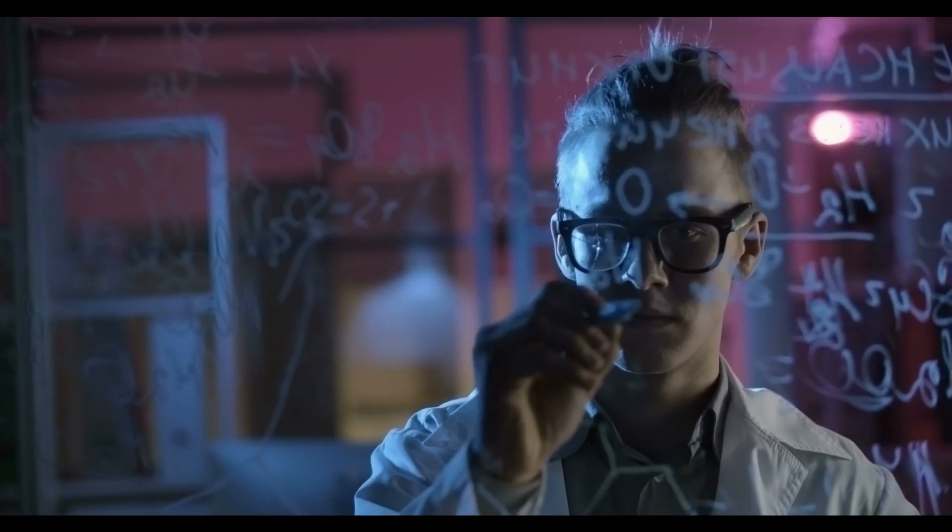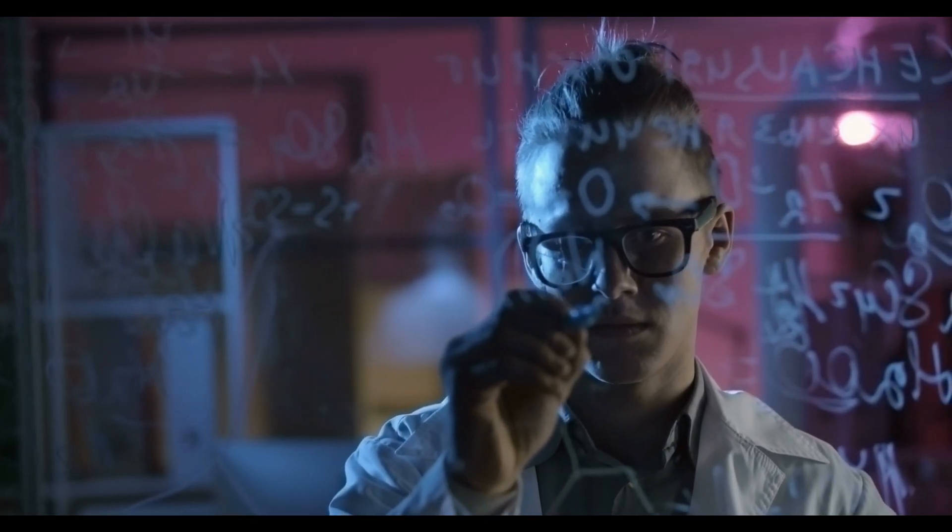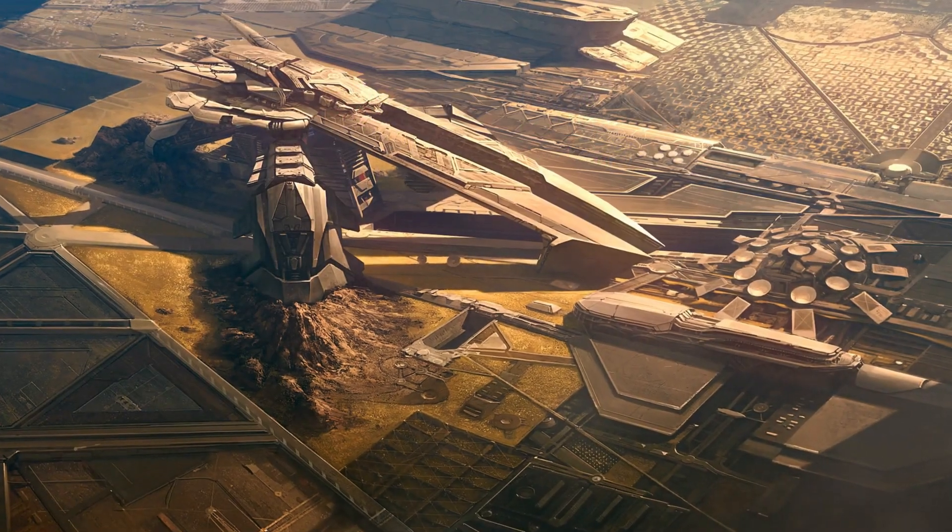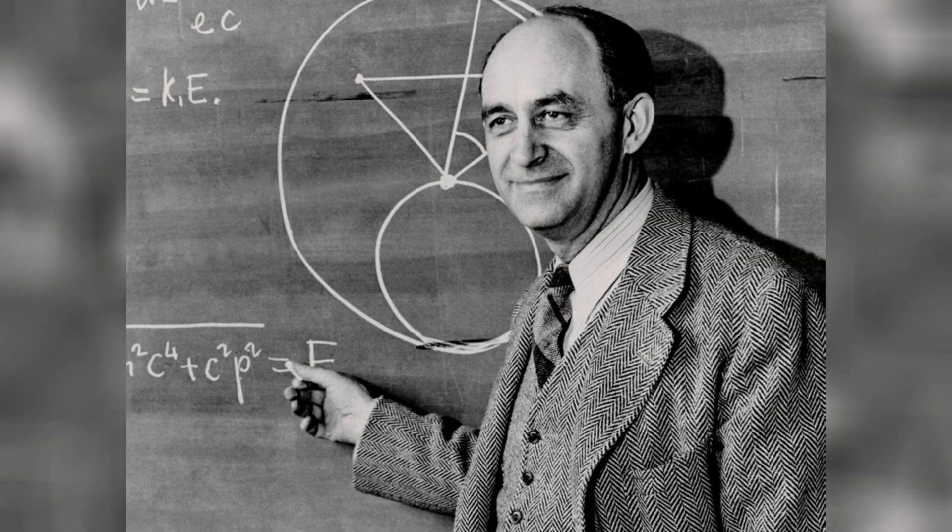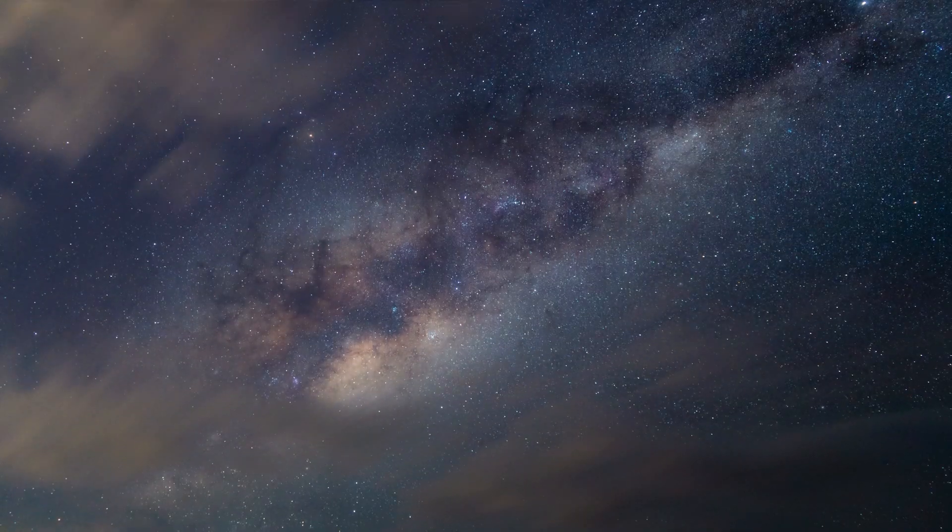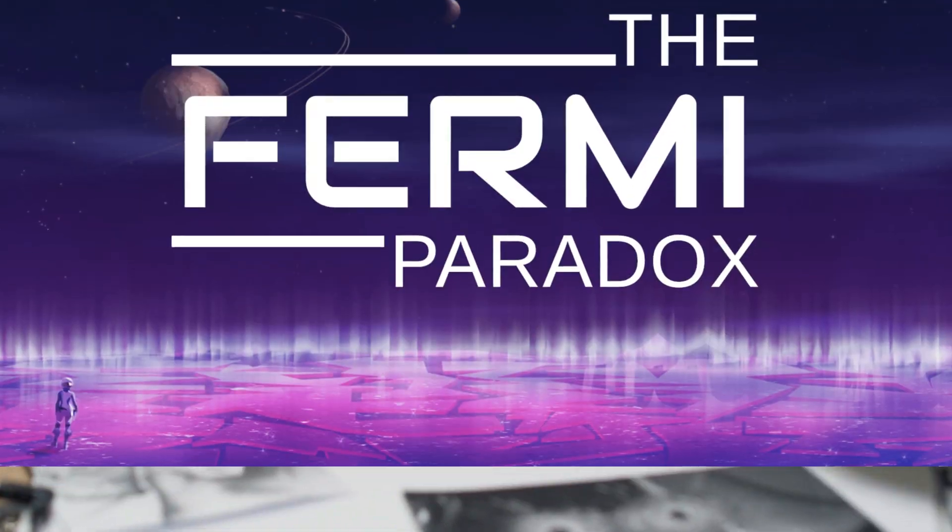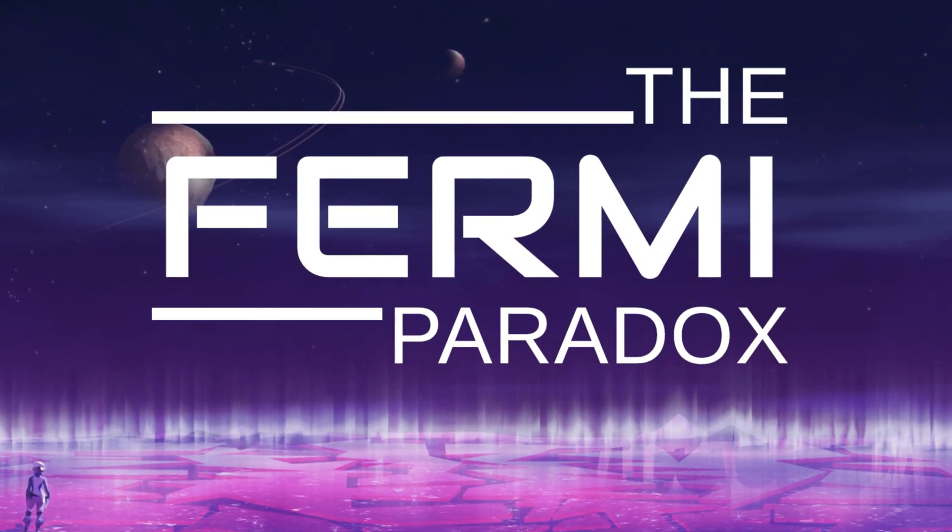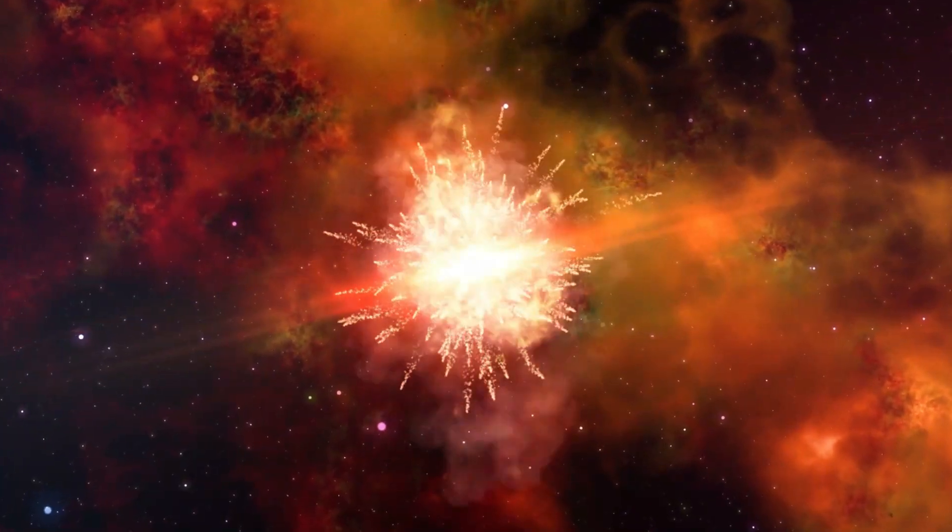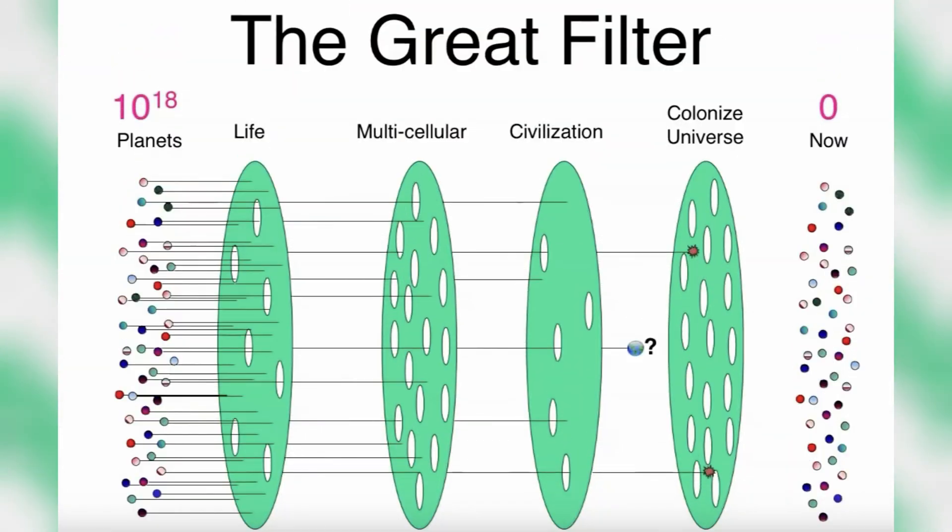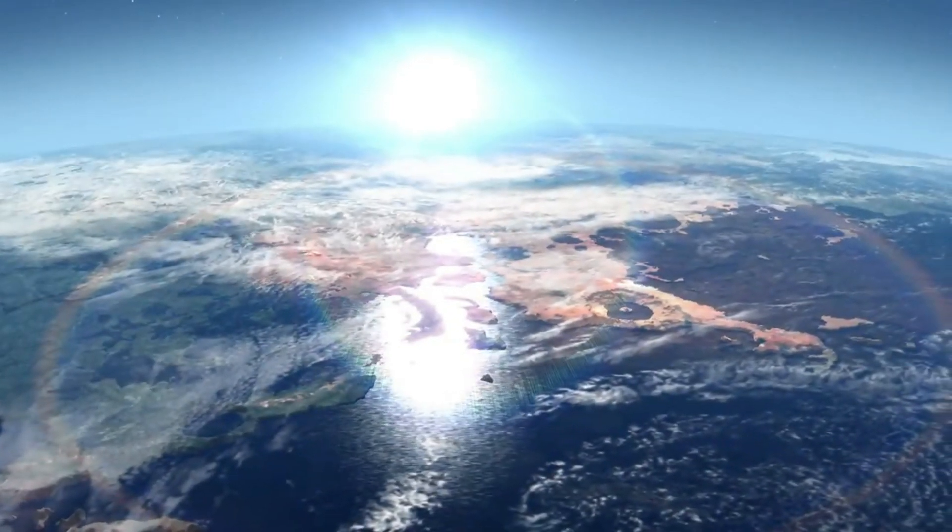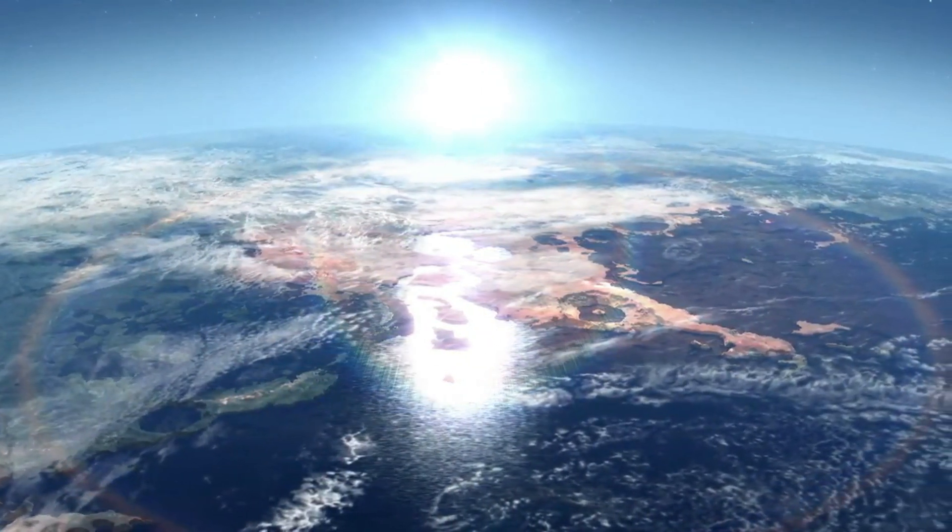The Fermi Paradox is a fascinating concept that raises thought-provoking questions about the existence of extraterrestrial life. Named after physicist Enrico Fermi, this paradox explores the apparent contradiction between the high probability of other civilizations in our galaxy and the lack of evidence for their existence. One possible explanation for this paradox is that advanced alien civilizations may have faced immense challenges or catastrophes that prevented their expansion and exploration beyond their home planet. This idea suggests that there could be a great filter, some critical step or event in the evolution of intelligent life that is extremely rare or difficult to overcome.